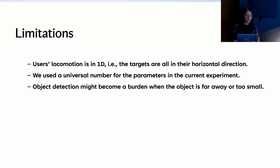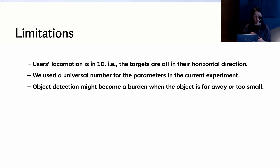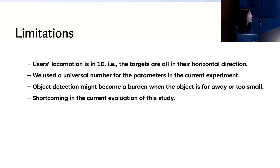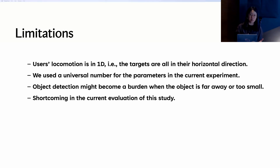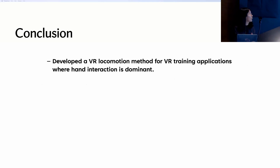Additionally, the current evaluation only compares with point-and-teleport; future work plans to compare with more similar locomotion methods such as gaze-based and foot-based methods. In conclusion: we developed a VR locomotion method for training applications where hand interaction is dominant. Unlike controller-based teleport methods that may conflict with hand operations and negatively affect training outcomes, our method enables users to teleport to a remote object by taking a step toward it while looking at it using head orientation rather than gaze direction.